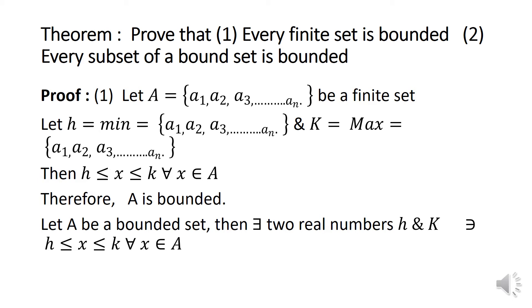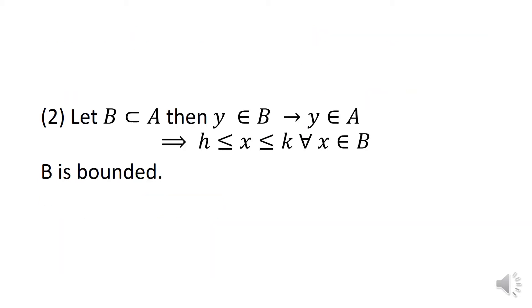For the second part — every subset of a bounded set is bounded — let A be a bounded set. There exist two real numbers H and K such that H ≤ X ≤ K for all X in A. Let B be a subset of A. Then Y belonging to B implies Y belongs to A also, which implies H ≤ Y ≤ K for all Y in B. Therefore, B is also a bounded set.